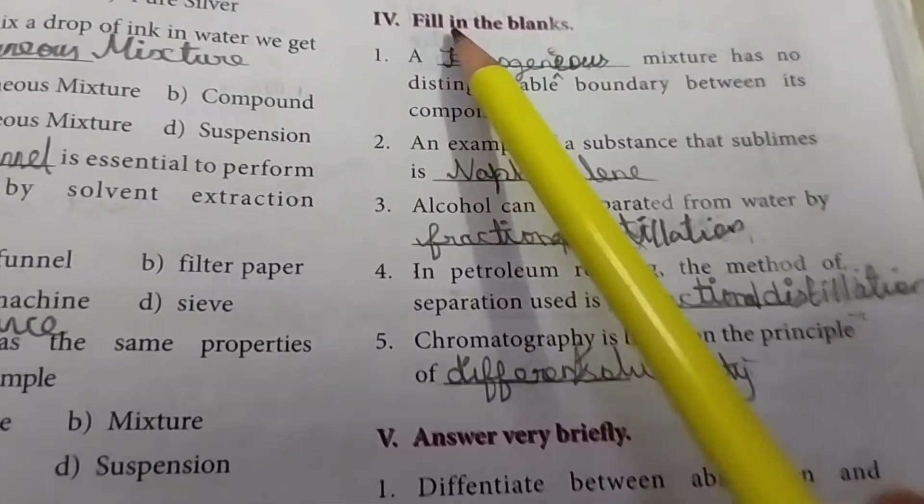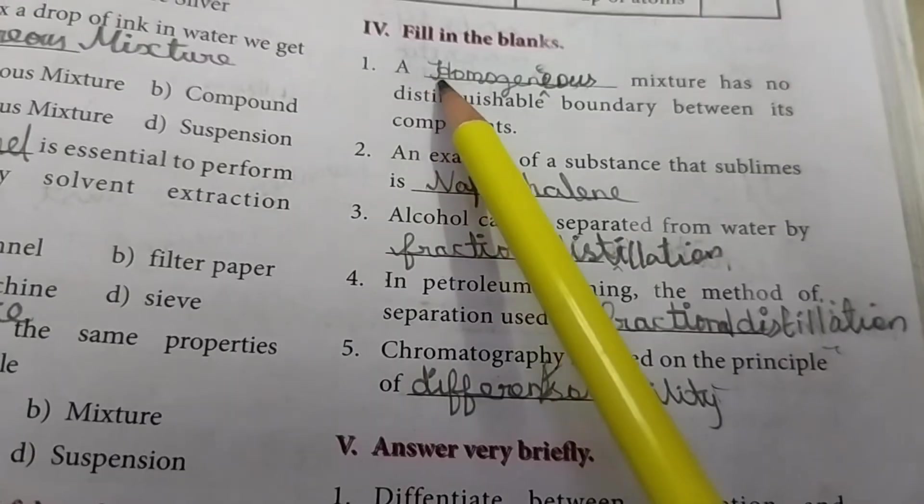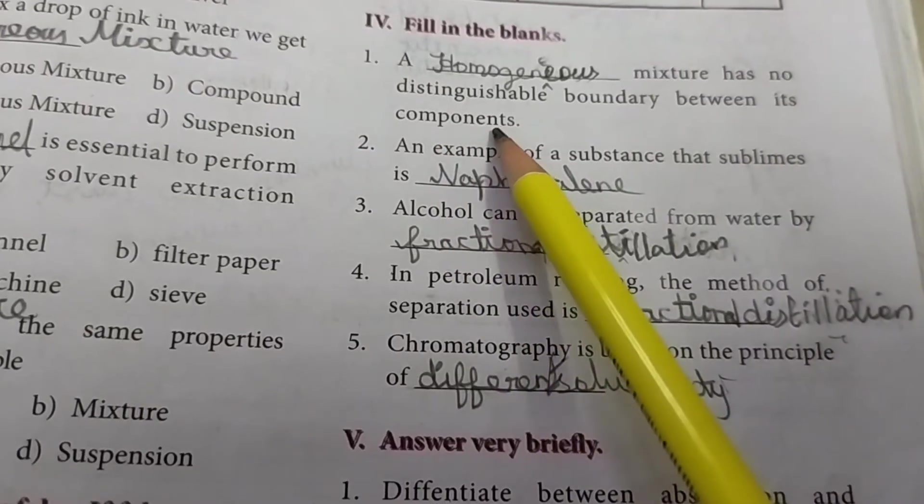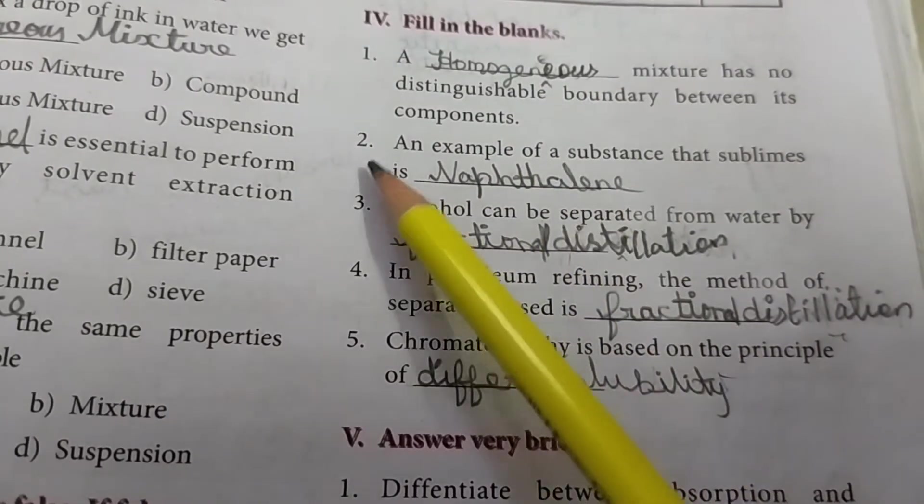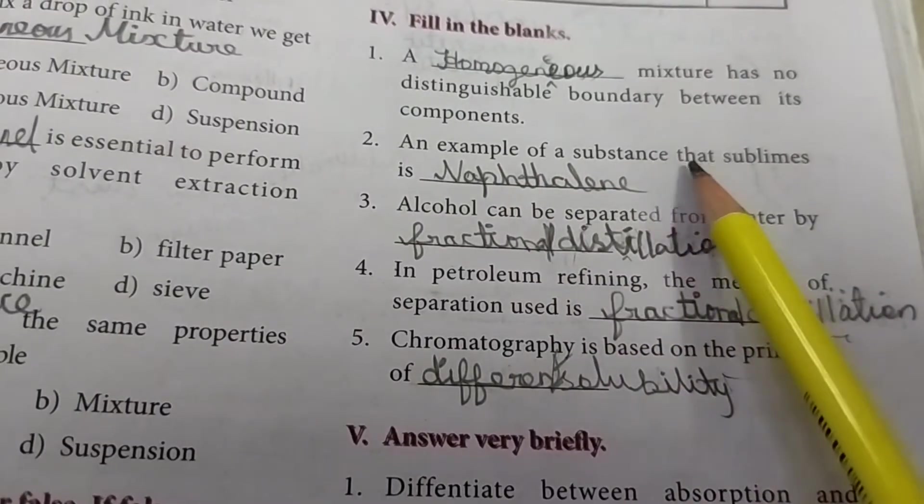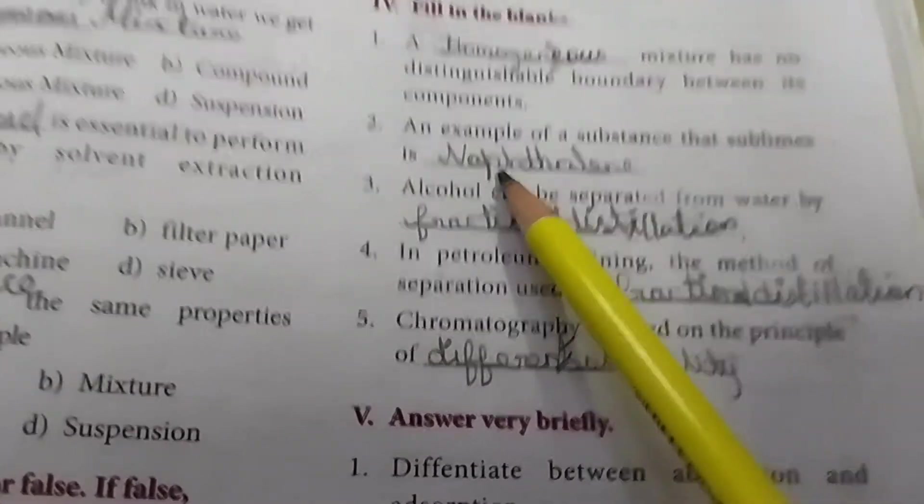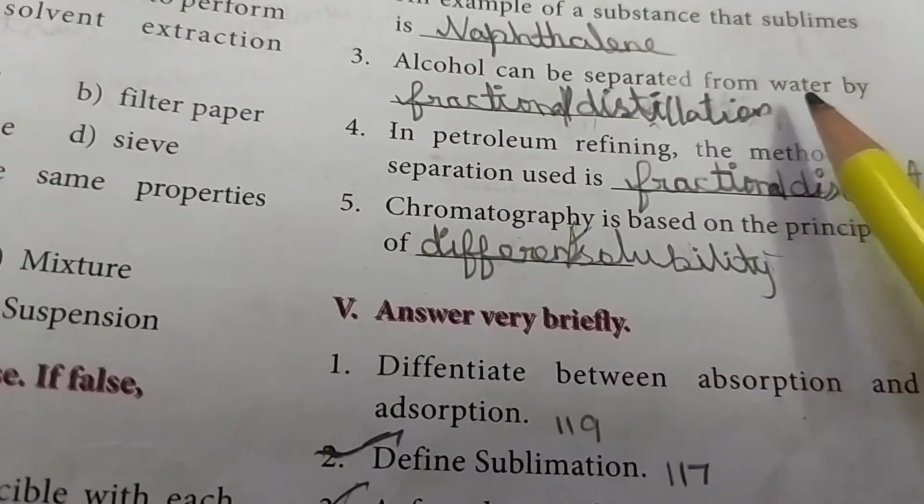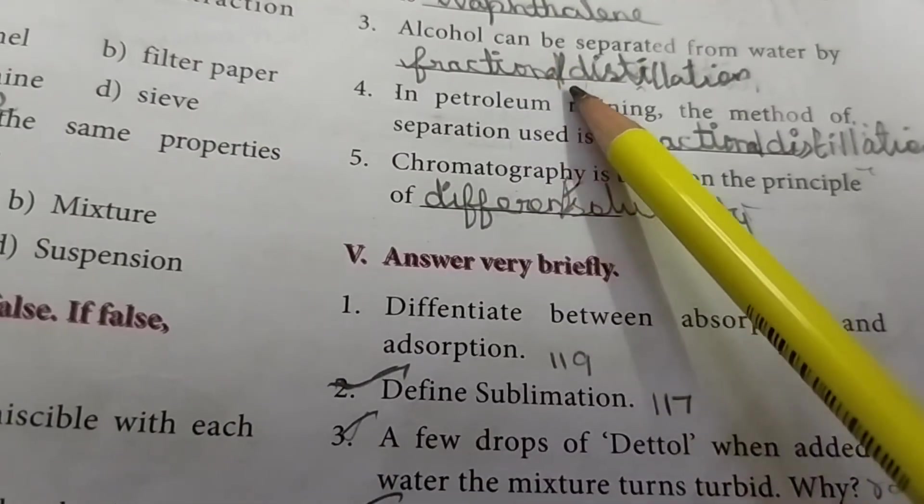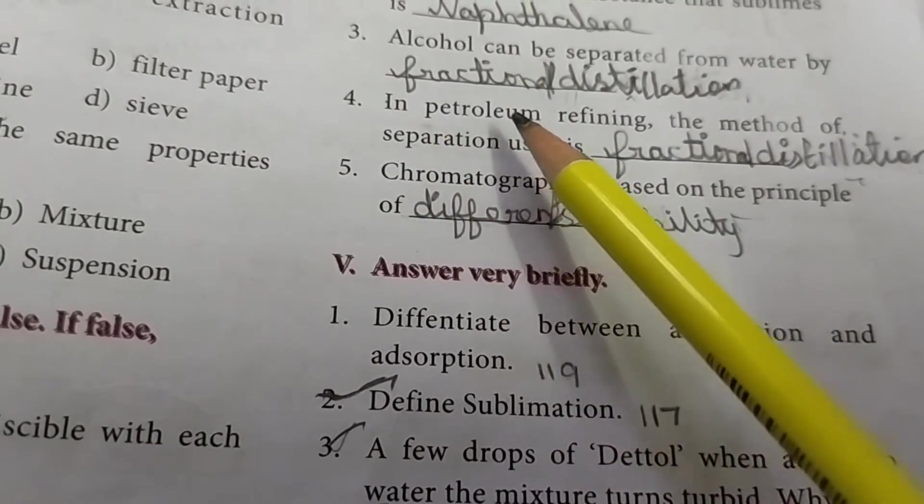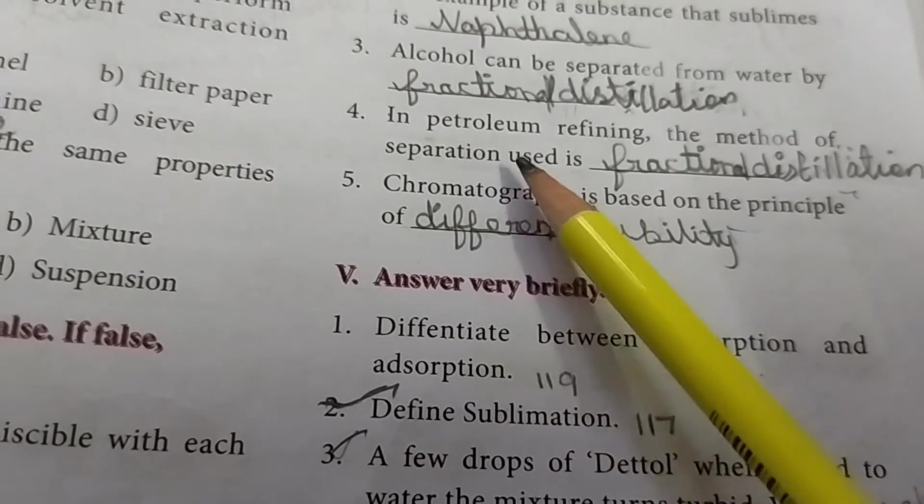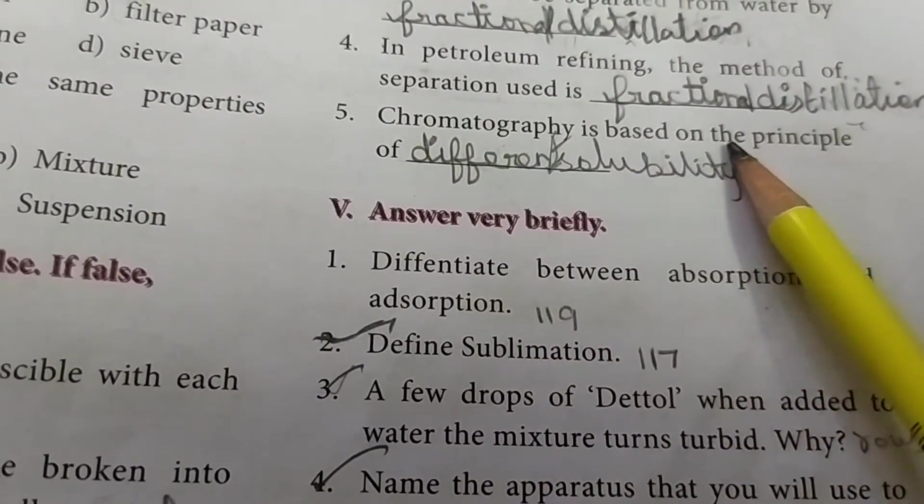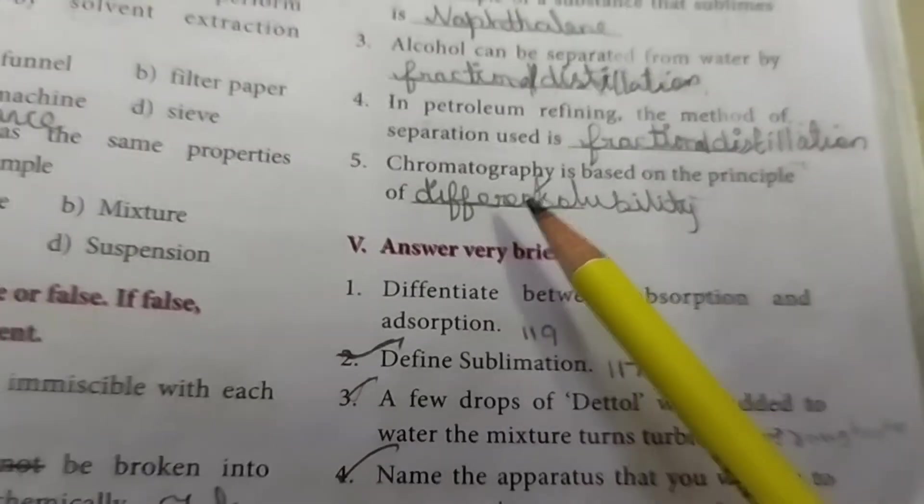Fourth: Fill in the blanks. First, homogeneous mixture has no distinct visible boundary between its components. Second, an example of a substance that sublimes is naphthalene. Third, alcohol can be separated from water by fractional distillation. Fourth, in petroleum refining the method of separation used is fractional distillation. Fifth, chromatography is built on the principle of different solubility.